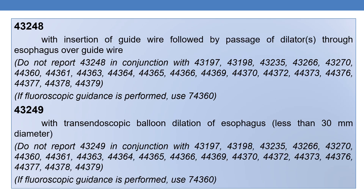The next CPT is 43248. It deals with esophagogastroduodenoscopy, flexible, transoral, with insertion of guide wire followed by passage of dilator through the esophagus over the guide wire. If fluoroscopic guidance is performed, use 43368. The next is 43249: esophagogastroduodenoscopy, flexible, transoral, with transendoscopic balloon dilation of the esophagus. The dilation must be less than 30 mm in diameter.